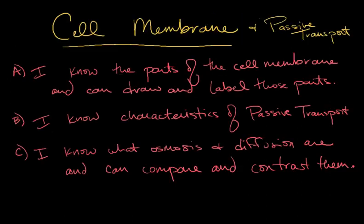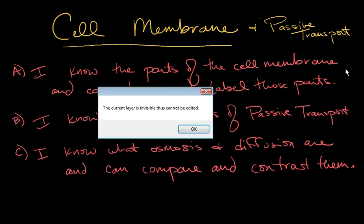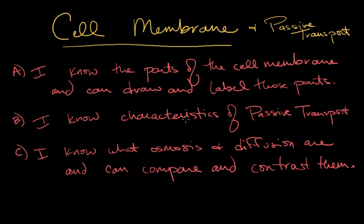Let's go back to the objectives or the learning targets. Can you draw and label, and do you know, can you draw and can you label the parts of the cell membrane? And if yes, then give yourself a check mark. If you know characteristics of passive transport, give yourself a check mark. And you know what osmosis and diffusion are, you can compare and contrast them, give yourself a check mark.